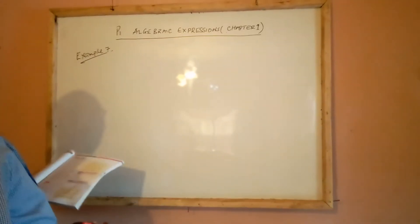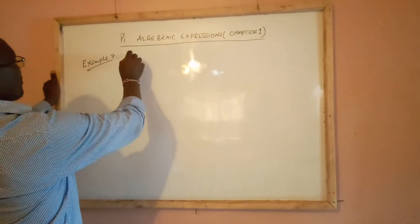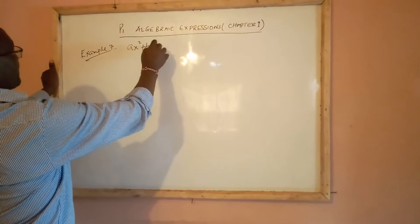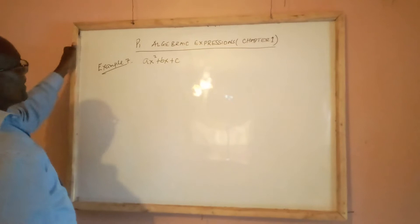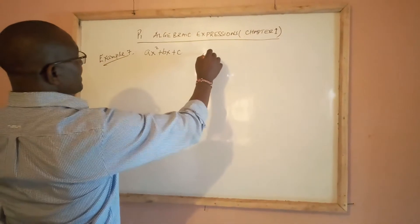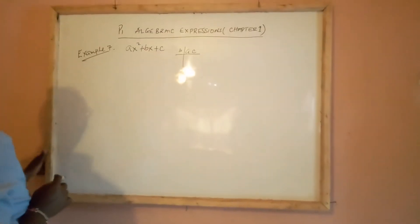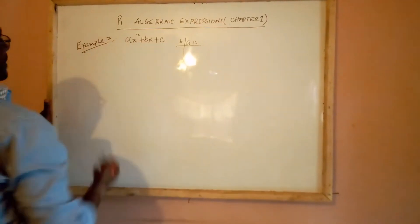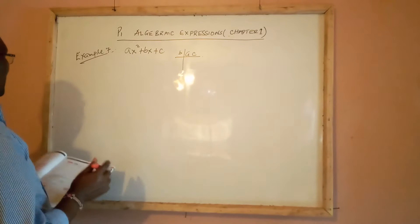Under example 7 we are going to learn how to factorize quadratic equations. A general quadratic expression is ax squared plus bx plus c. There are two critical steps: we look for two factors that when multiplied give us ac, and when added give us b. We are looking for two factors such that their product equals ac and their sum equals b.